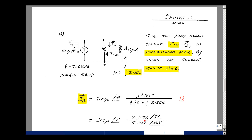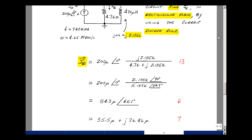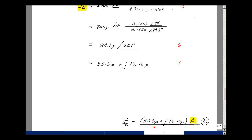The numerator is 2.185k at an angle of 90 degrees. Entering into my calculator, the denominator magnitude is bigger than either component, and the angle is in the first quadrant but less than 45 degrees — 24.9 degrees seems reasonable. The overall magnitude is 200 micro times 2.185k divided by 5.183k, which is 84.3 micro. The angle is 0 plus 90 minus the denominator angle, giving 65.1 degrees. Putting that into rectangular form: magnitude times cosine for the real part, magnitude times sine for the imaginary part. The final answer is 35.5 micro plus j 76.46 micro amps. You can put the micro inside or outside the brackets — it means the same thing.